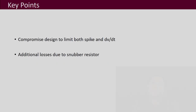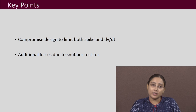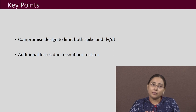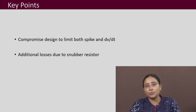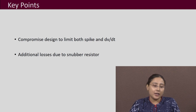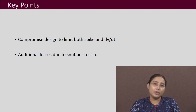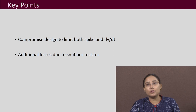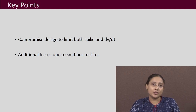The key points of this lecture: we can do a compromise design that tries to limit both dv/dt and the spike voltage. The procedure is the same — obtain graphs and different plots and use those to do the compromise design. We must also be aware of the additional losses due to the snubber, and ensure those losses are not too high so as to reduce converter efficiency. If they are, we can redo the snubber design to adjust the losses.